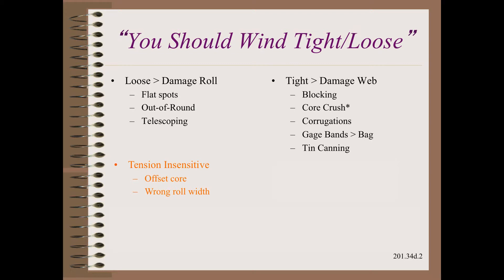The last category: I select a couple of defects of the hundreds of possible types that are roll structure or taper sensitive. These are, namely, one of the seven types of starring and two of the seven types of telescoping. I have written on many occasions about my total disgust with the concept of taper and how it is overplayed and poorly done on the rare occasion when it matters.